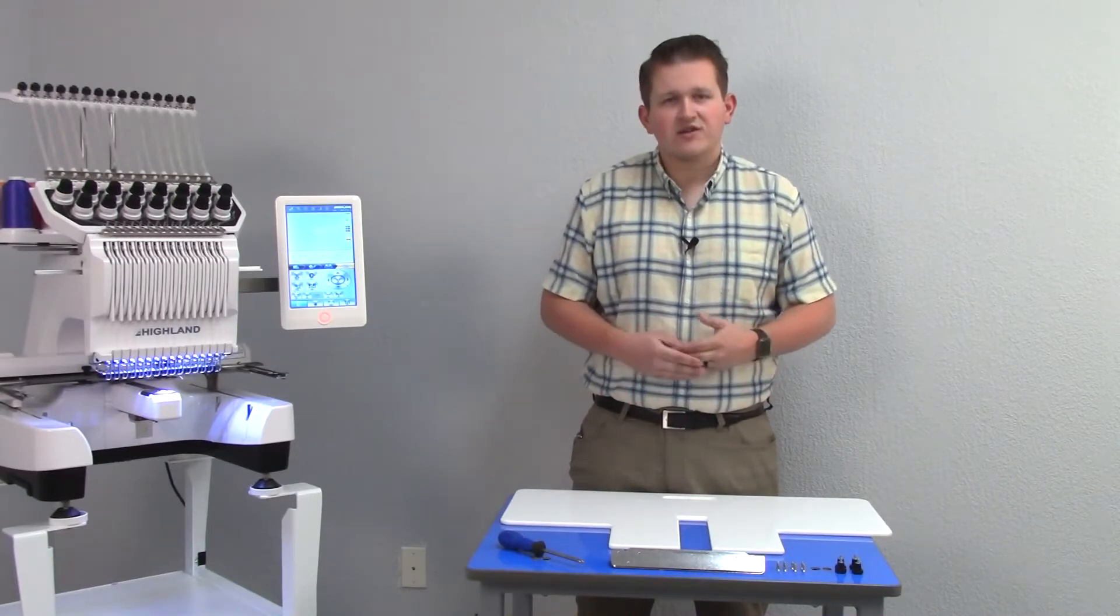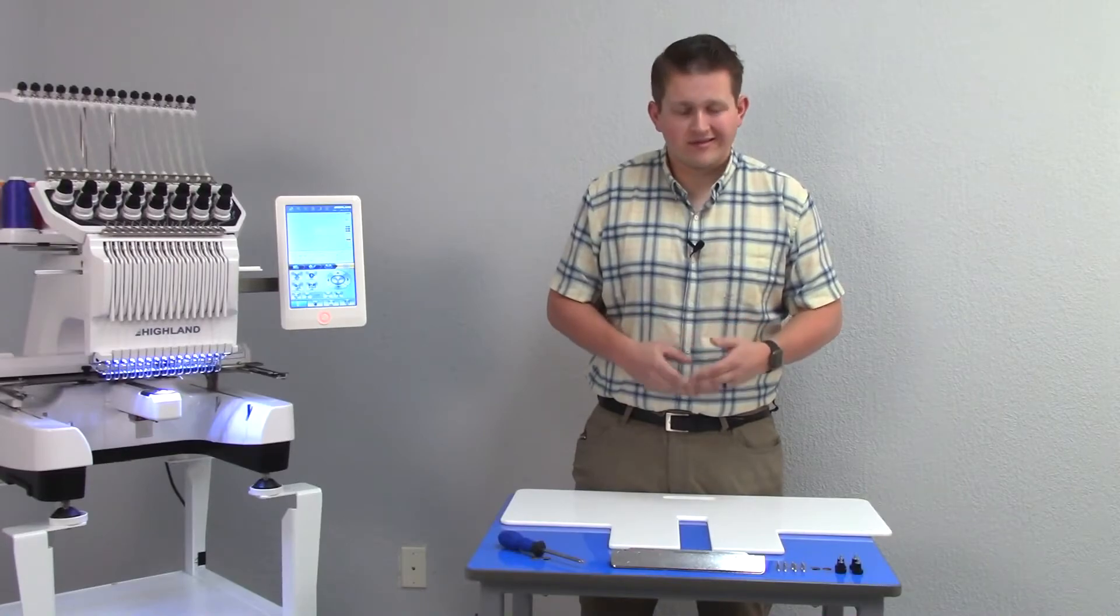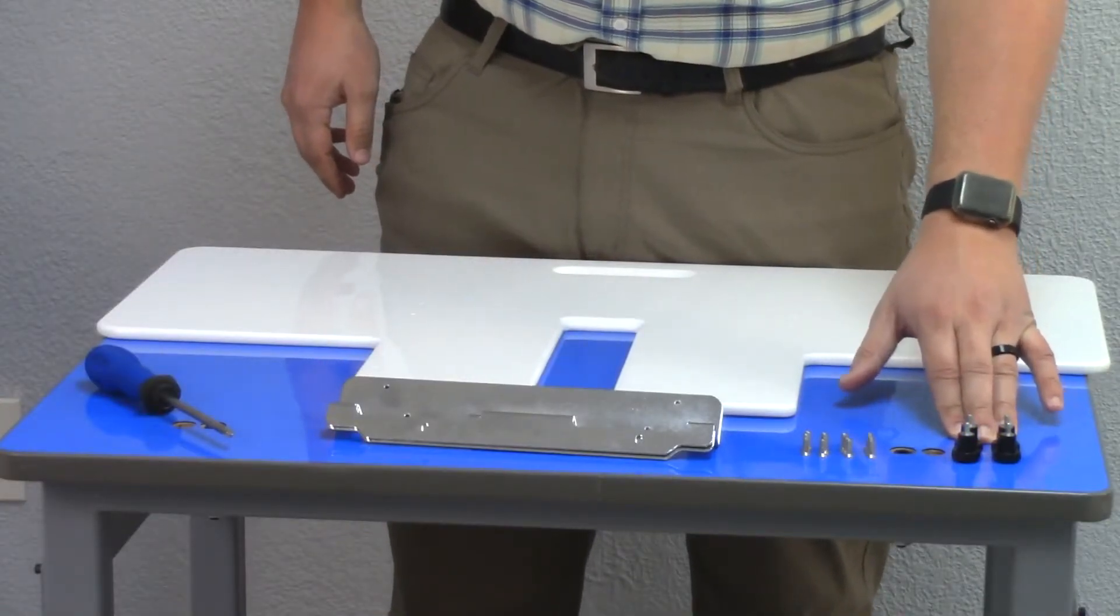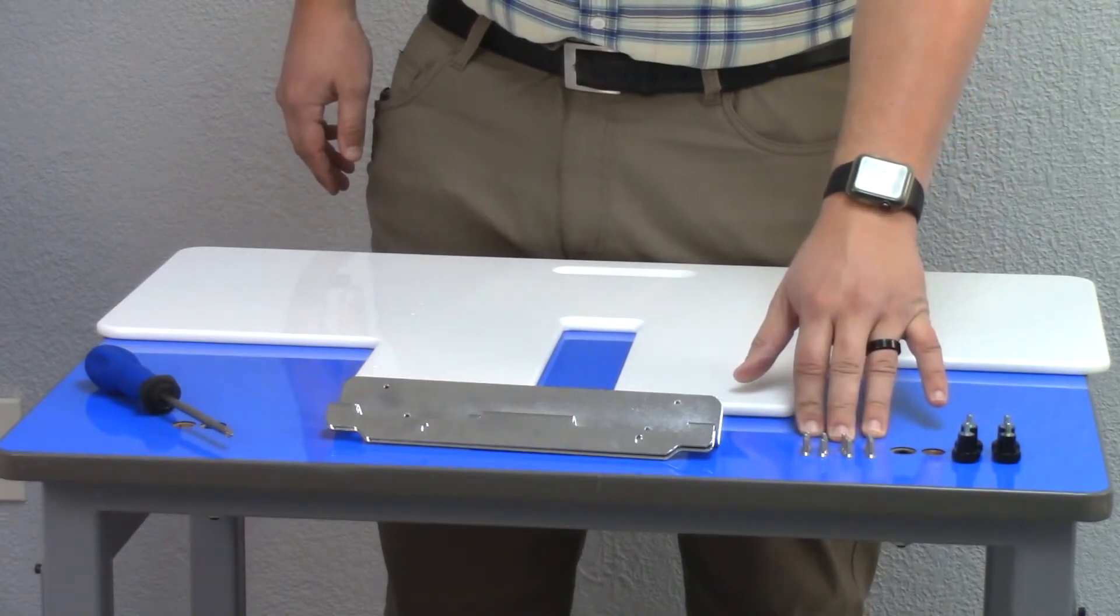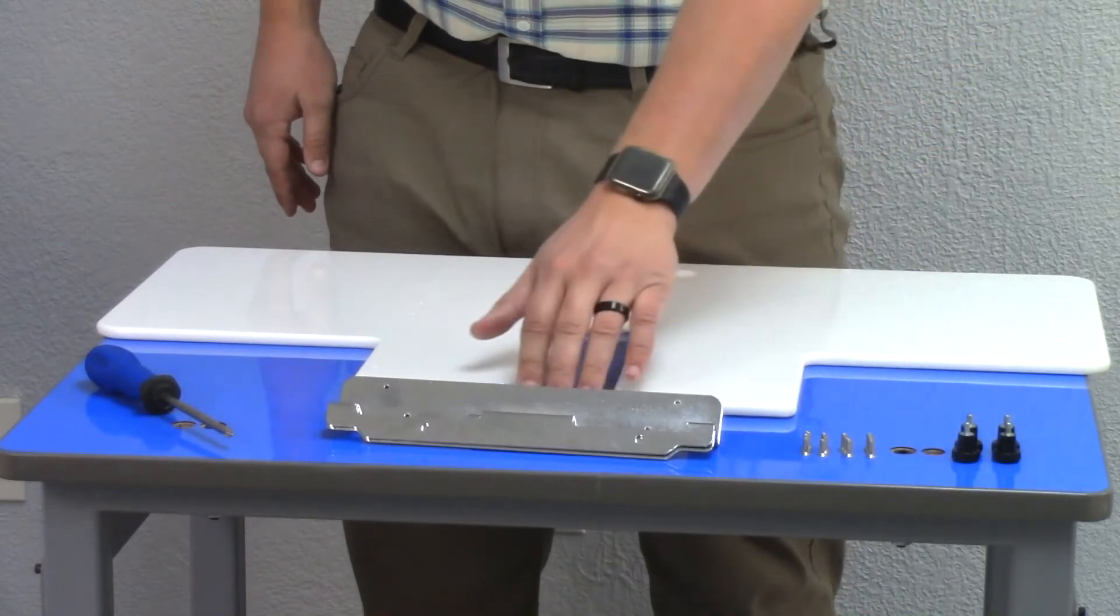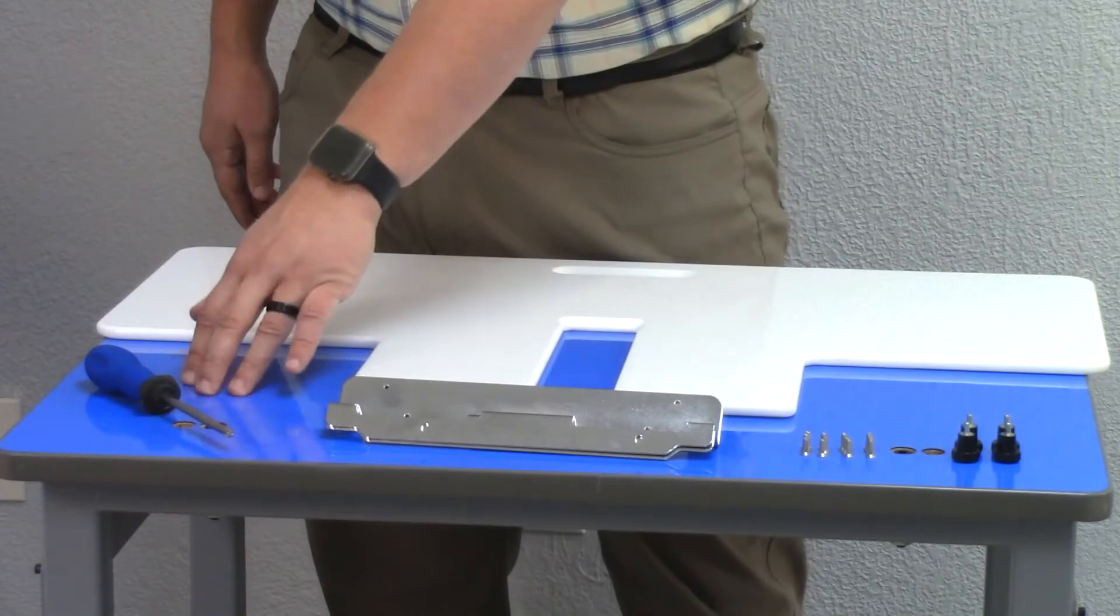Before we install our table on our machine, we need to gather a few things. First, you're going to need these four black thumb screws, 12 small Phillips head screws, both of which came in the tool box with your machine. You'll need these two silver table brackets and one Phillips head screwdriver.